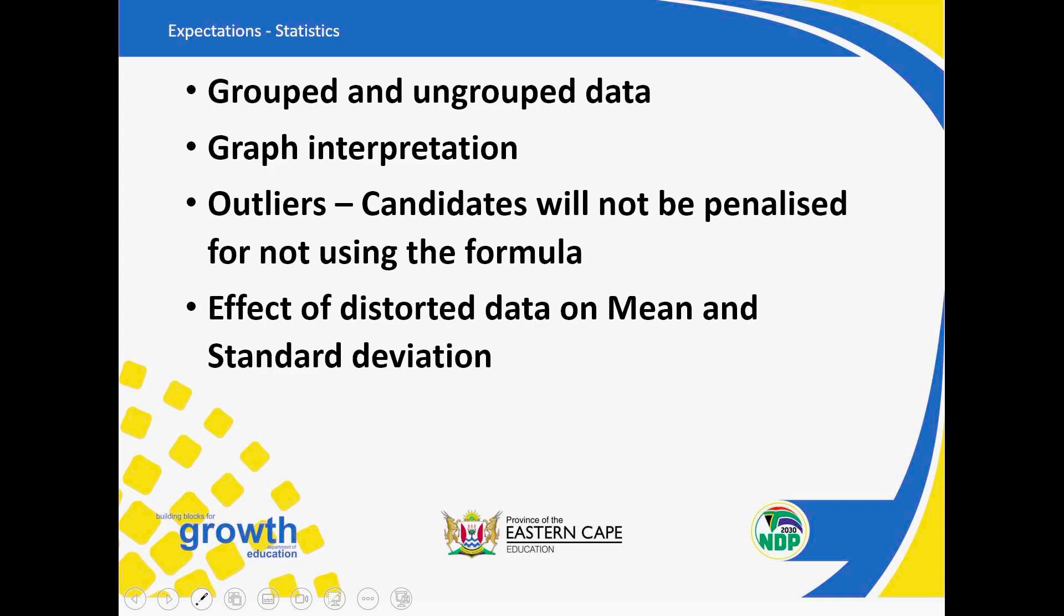Then the outlier, you are not expected to use a formula. You can use a formula, the formula which says Q1 minus 1.5 times interquartile range, and then Q3 plus 1.5 times interquartile range. You can use that one, but you can also not use it and find it like what was asked in your trial paper. There was a question that wanted you to find the outlier.